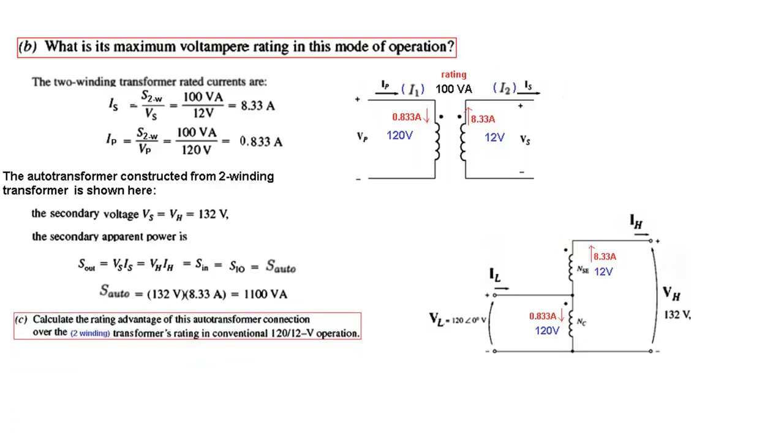And then the final question is find the rating advantage over the two. So just like the previous one the power advantage S auto divided by S 2 winding 1100 divided by 100 from here. So 11 times power advantage we are getting in this case.